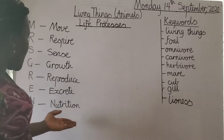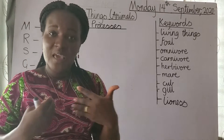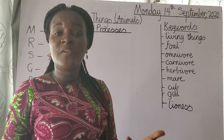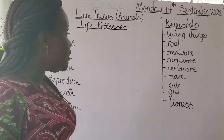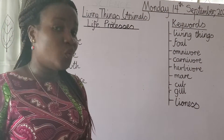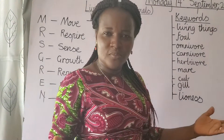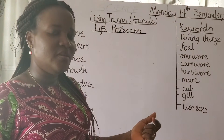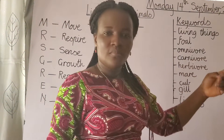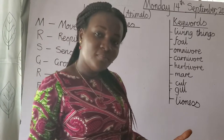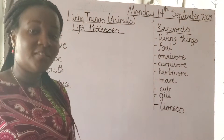The last life process is nutrition. Animals also need food to survive, just like you and I. Some animals eat only plants — those animals are called herbivores. An example is the cow. Animals that eat only flesh or meat are called carnivores — like the lion, the jaguar, and the tiger.